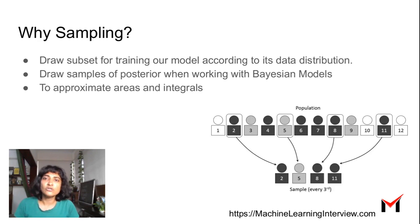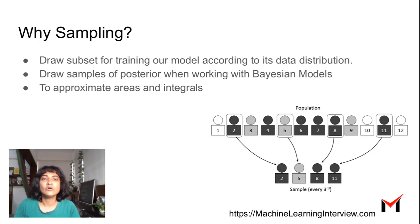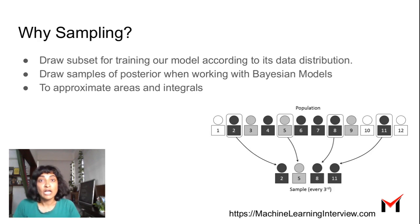We also use sampling when working with Bayesian models. With Bayesian models, we compute something called a posterior distribution instead of just computing a single point answer. In order to compute this posterior, we often draw samples from it instead of coming up with a closed-form formula. Sampling has also been used to approximate areas and integrals.